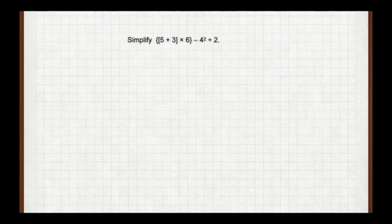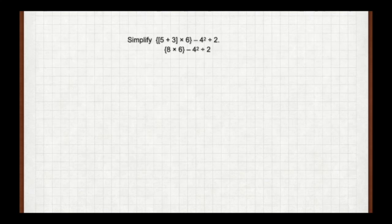Here are two practice problems. We have in brackets: (5 plus 3) times 6, all in parentheses, minus 4 squared divided by 2. We do the parentheses first: 5 plus 3 gives us 8. Then 8 times 6 is still in another set of parentheses, so we do that: that's 48. Now we have 48 minus 4 squared divided by 2.